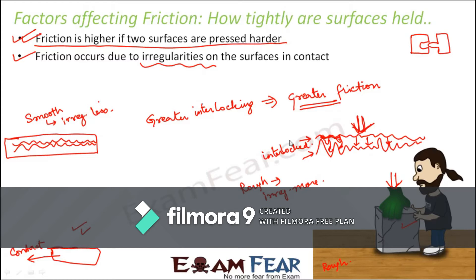So even if we are talking about the same surface and the same object, if those two objects are pressed harder to each other, friction increases. When friction increases, it becomes difficult to make the object move, and you need to apply an even greater amount of force.